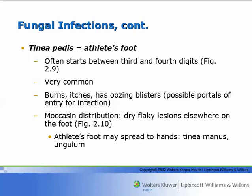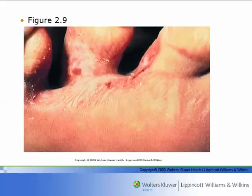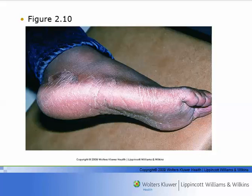It can spread to your hands and other places. The classic look is the moccasin distribution. It spreads onto locker room floors and showers. I particularly worry about people putting their feet up on benches and shedding onto the bench — then somebody else might sit on that bench without a towel, and it can lead to jock itch because it's basically the same fungus.